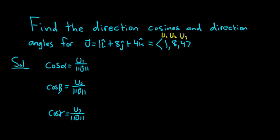All we have to do now is figure out the magnitude of u. The magnitude of u equals the square root, and what you do is you square each of the components. So you get 1 squared plus 8 squared plus 4 squared.